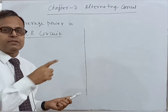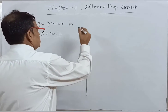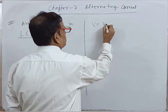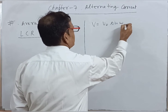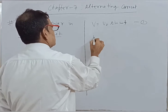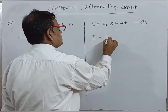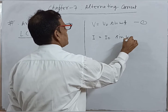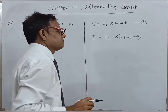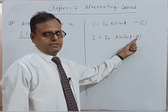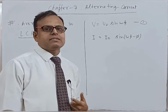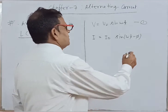I am going to derive it. Here, the AC voltage V is equal to V₀ sin ωt — equation 1. And the corresponding AC current I is equal to I₀ sin(ωt − φ). Here the phase difference is φ and the current lags by φ. This is my assumption — equation 2.